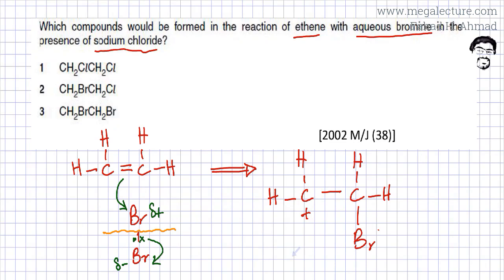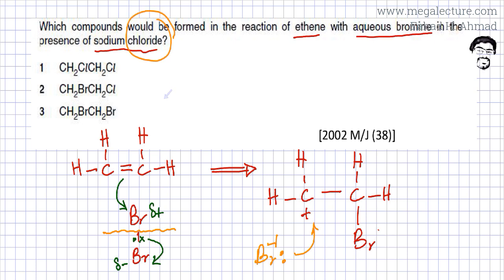In the next step of this electrophilic addition reaction, remember you had a Br⁻ that had broken away. So this Br with a −1 charge and its extra electrons is going to be attracted to the positive carbocation. But remember, in this question the tricky part is that NaCl is present as well. In NaCl, you have Cl⁻ ions already present in solution. So instead of Br⁻, you have another option: Cl⁻ ions can also get attracted to this positive carbocation.